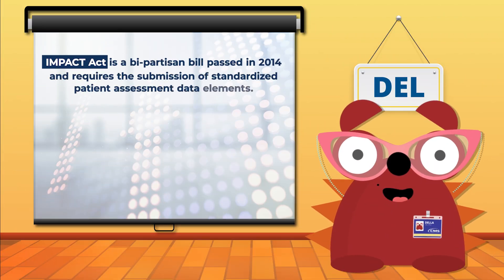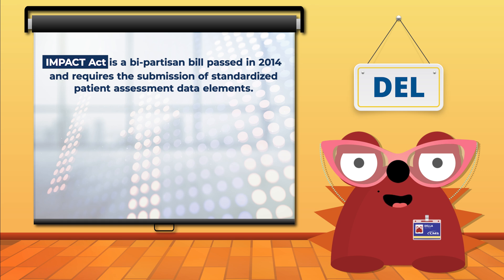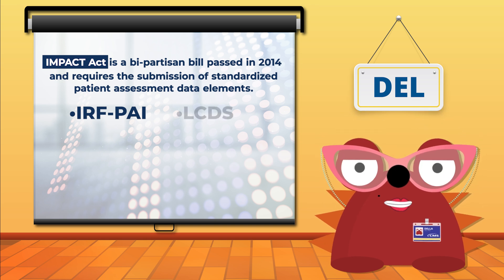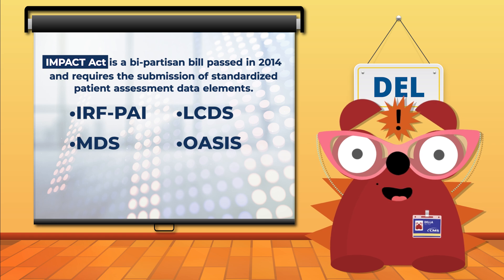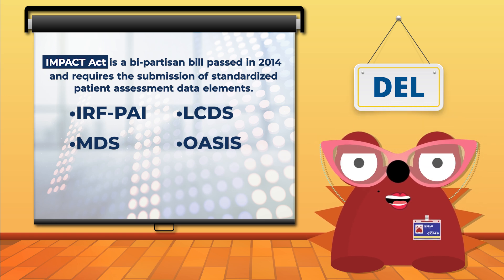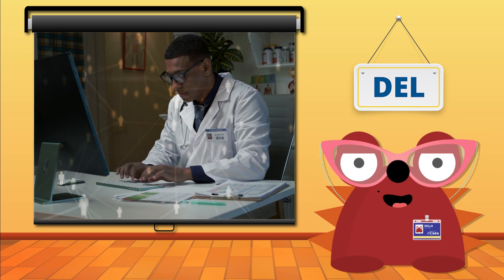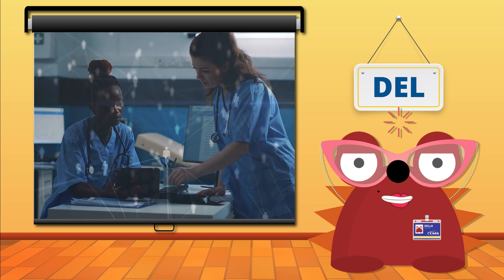The IMPACT Act is a bipartisan bill passed in 2014 and requires the submission of standardized patient assessment data elements by inpatient rehabilitation facilities, long-term care hospitals, skilled nursing facilities, and home health facilities. The Act requires the data elements be standardized and interoperable to allow for the exchange of data between post-acute care providers and other providers, and efforts to coordinate care, reduce provider burden, and improve quality measures.